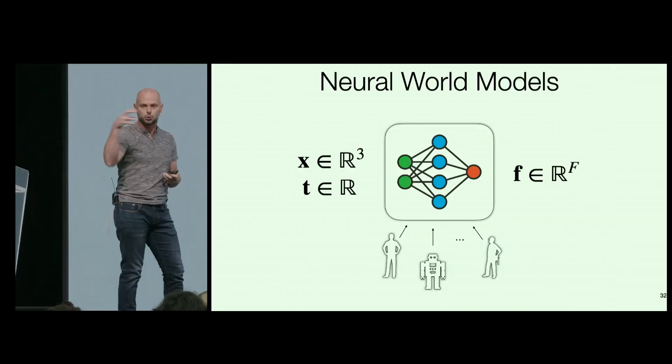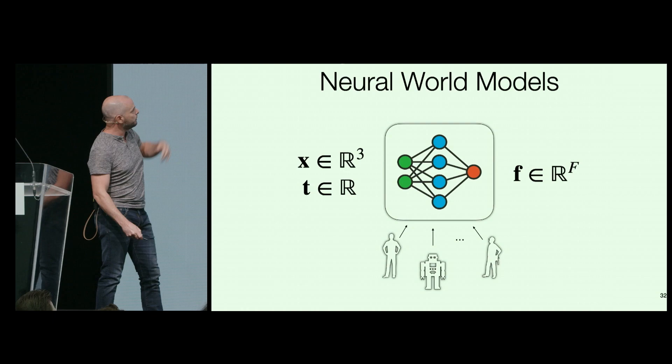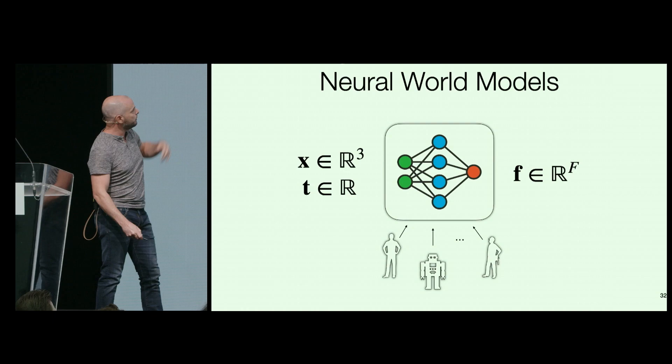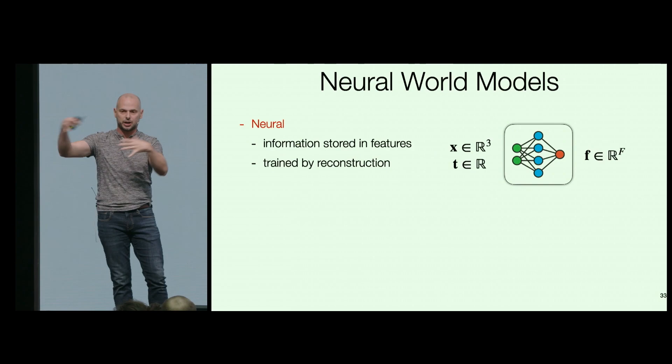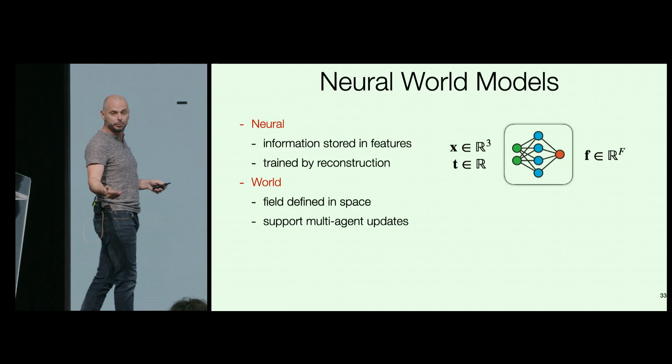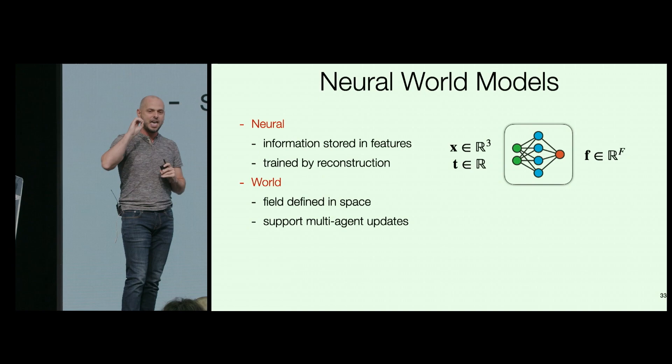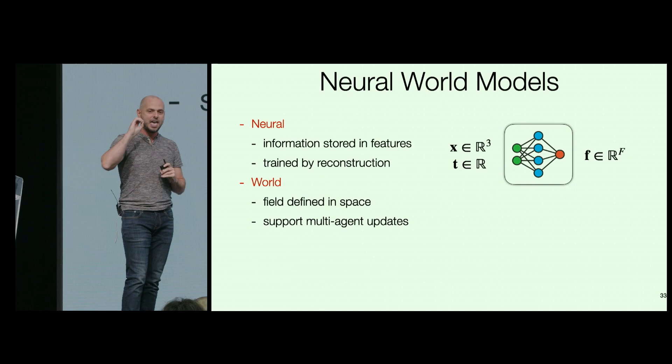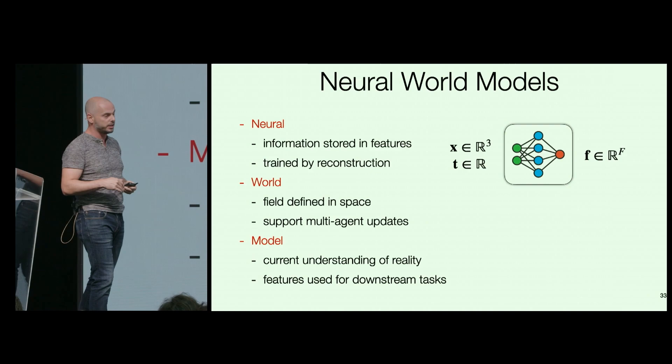Neural world models have three elements. It's neural because everything is a feature trained by self-supervision, just to reconstruct the data seen at training time. It's a world model because features are defined spatially in space and perhaps time, supporting multiple agents — every active agent in the universe contributing information to a shared repository of knowledge. And it's a model — a current understanding of reality — where features stored in the neural model should be used for downstream tasks. These are the three pivotal elements of neural world models.